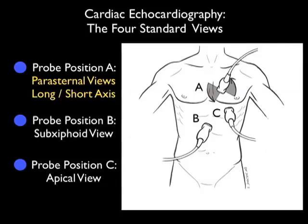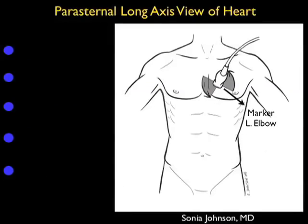The last view is going to be shown by probe position C, the apical view of the heart at the point of maximal impulse. This module will specifically focus on the parasternal views, specifically looking at the long axis plane. There's a great deal of information we can get from the parasternal long axis plane, so let's learn how to perform the examination.